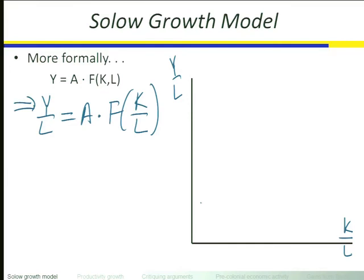As we increase capital per labor on the horizontal axis, we get more output per worker on the vertical axis. Every time we add one more machine without changing the number of workers — going from 10 to 11 to 12 to 13 machines per worker — we don't get the same increase in output per worker each time. Because of the principle of diminishing marginal returns, as we add machines without changing the amount of workers, we do get increases in output, but the increases get smaller and smaller.